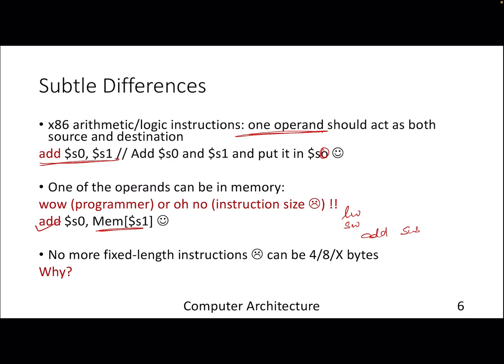So this is awesome for a programmer that programmer can do anything, we can access a memory even through an AND instruction. But think about the instruction size. If you remember the instruction decoding of MIPS, you are dealing with fixed size instructions of 32 bits, right? Four bytes.